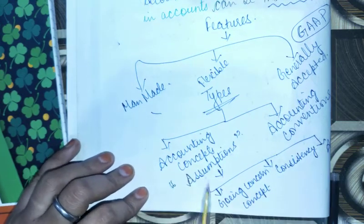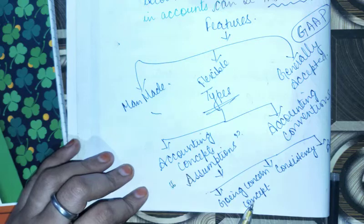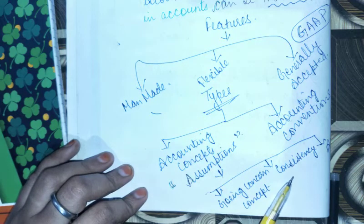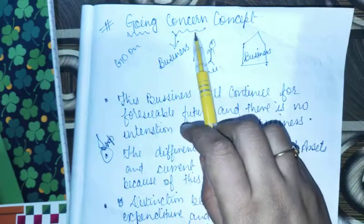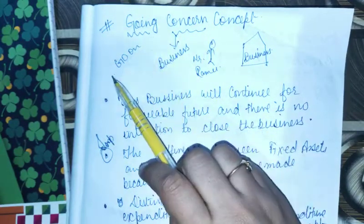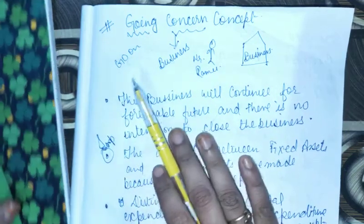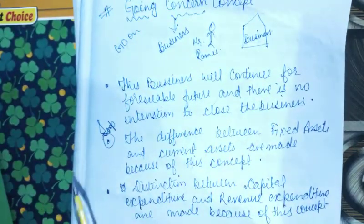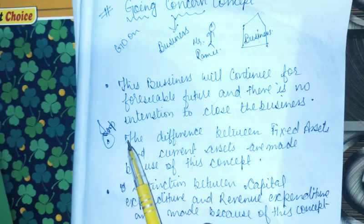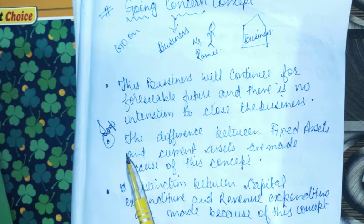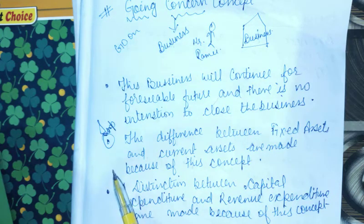In the last video we covered the going concern concept, consistency, and accrual. The going concern concept means that if any business is opened or established, it will continue for the foreseeable future and there is no intention to close the business.